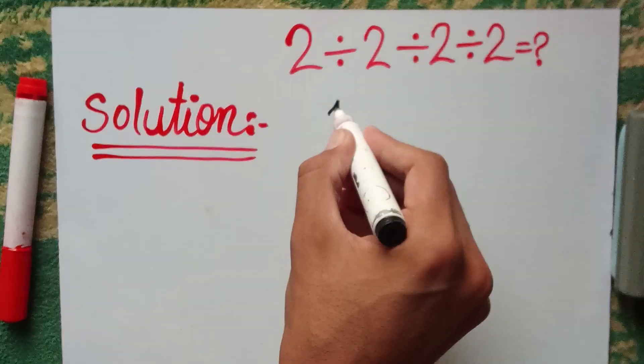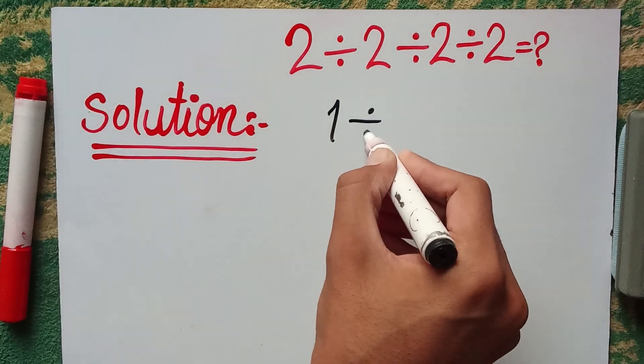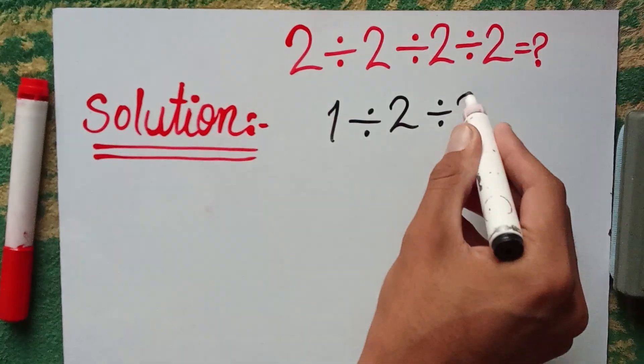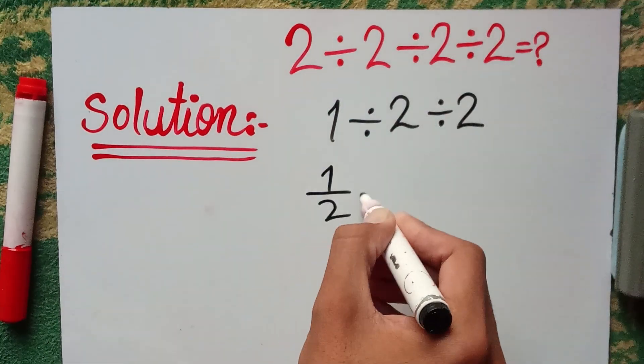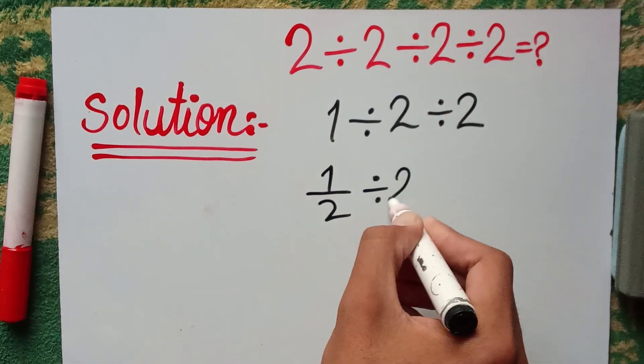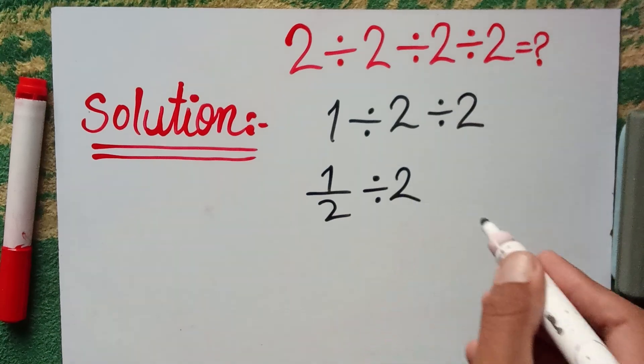So, 2 divided by 2 equals 1 divided by 2 and divided by 2. 1 divided by 2 we can write as one-half divided by 2. 1 divided by 2 divided by 2.